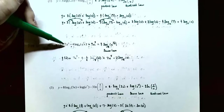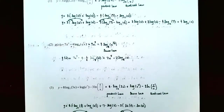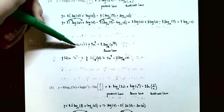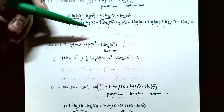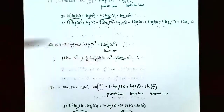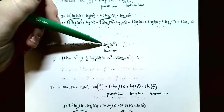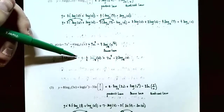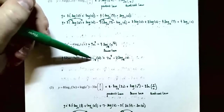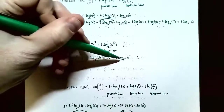Number 2: g(x) equals 7x^5 minus 4·log base 8 of √x. First, rewrite √x as x^(1/2). Now you have a power inside the logarithm, so use the power law: bring 1/2 down as a coefficient. So g(x) equals 7x^5 minus 4·(1/2)·log base 8 of x, which simplifies to 7x^5 minus 2·log base 8 of x.